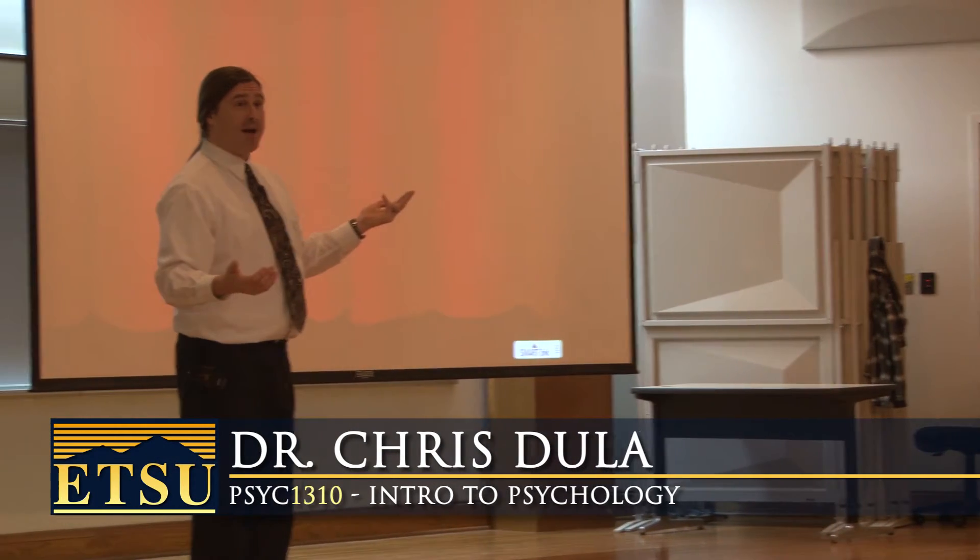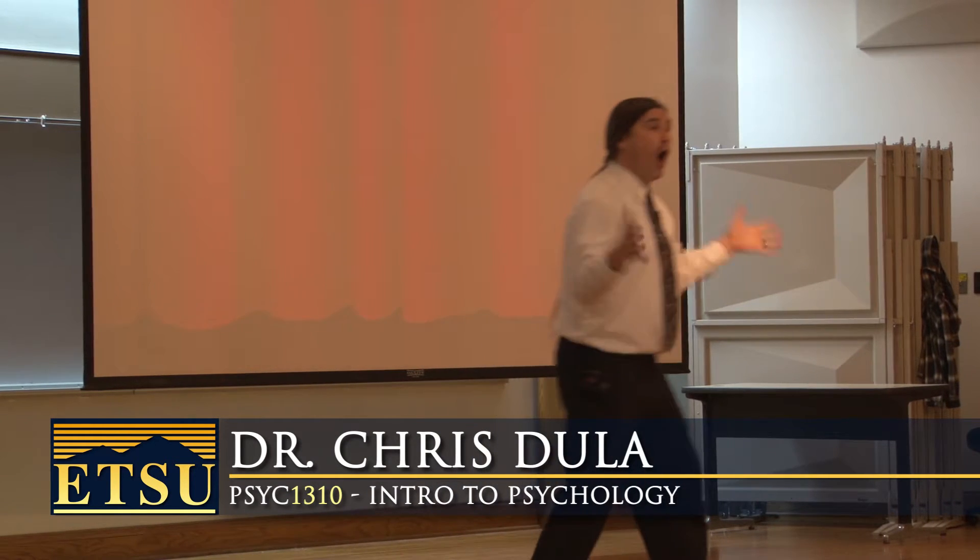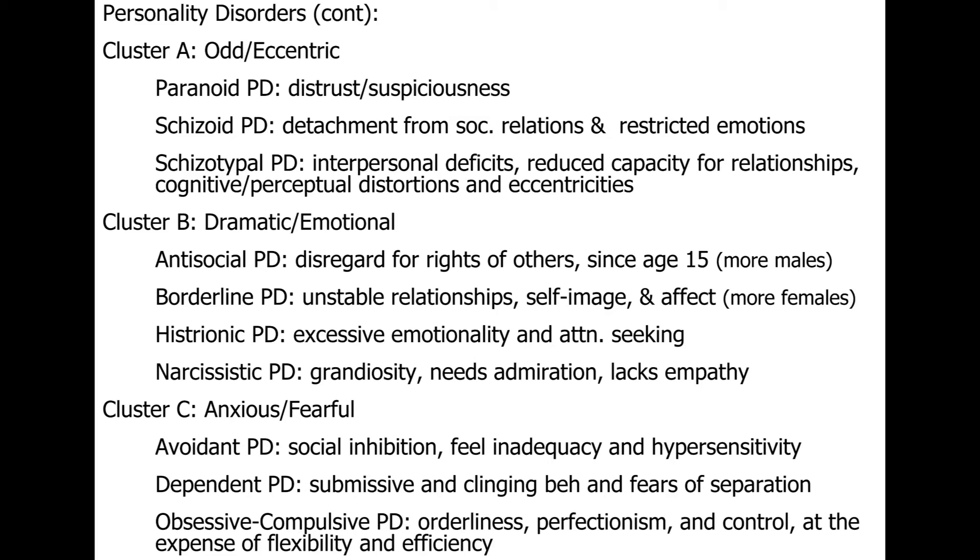So paranoid personality disorder is distrust and suspiciousness all the time. Now you can see that as a normal personality trait. It's good to be a little wary of people you meet. You don't want to go around trusting everybody that you meet, right? That's naive.